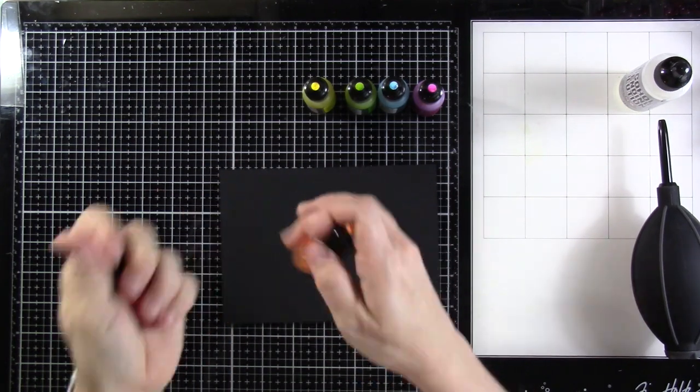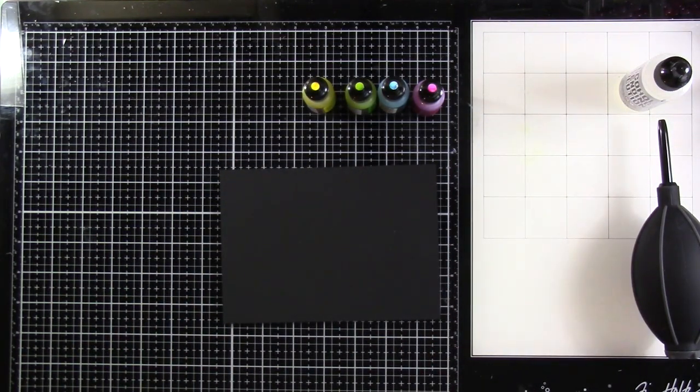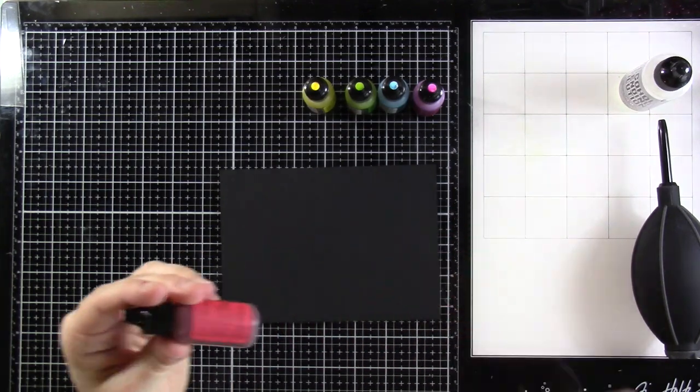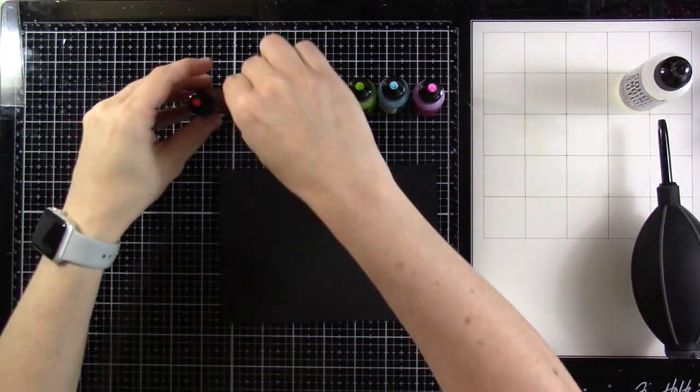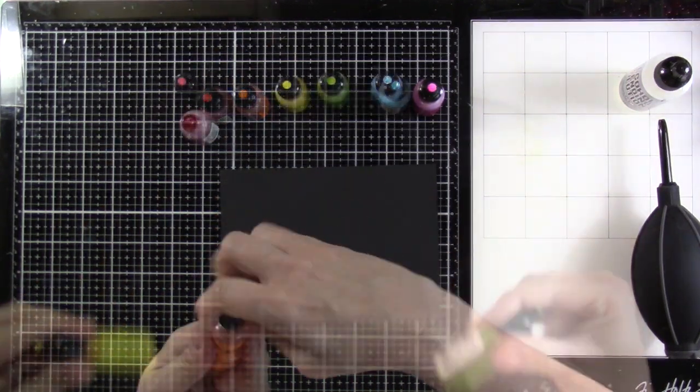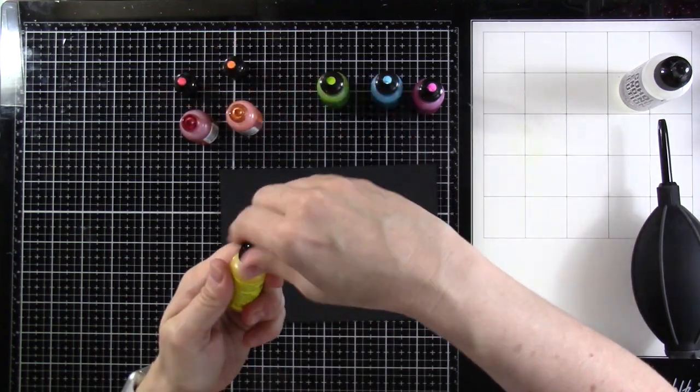So you'll notice with your alcohol pearl inks, if you've never used these before, they definitely need to be shook up. There's a ball inside there that will help get all of that sparkle powder or whatever it is distributed really well. So you just want to shake, shake, shake until you have all that stuff out of the bottom. And you'll know that you're good because it won't be there anymore.